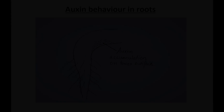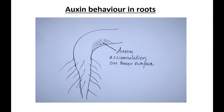The effect of auxins in roots is just the opposite to that in the shoot tips. In roots, auxins accumulate on the lower side of the roots and retard rather than accelerate the growth and extension of cells in the lower surface, thereby causing a downward curvature of the roots.